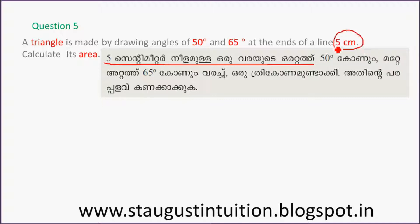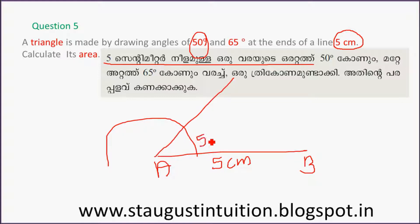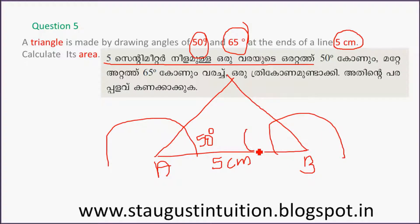First of all, draw a line AB with 5 cm. Then using a protractor, mark the angle 50 degrees at one end. Clear? Then mark 65 degrees at the other end using the protractor. Clear?